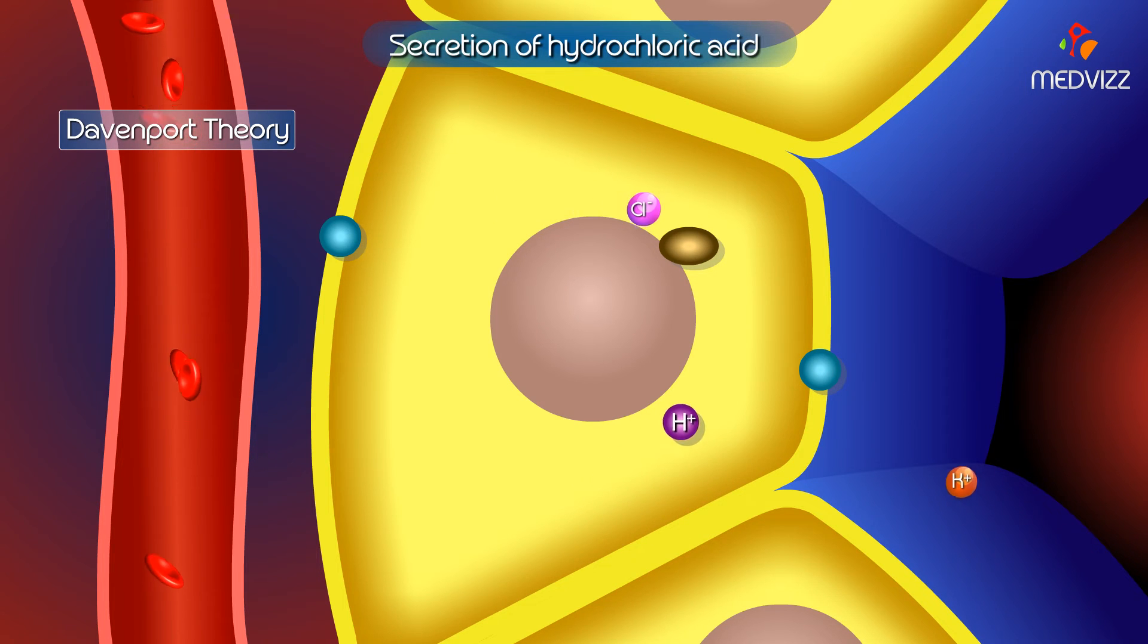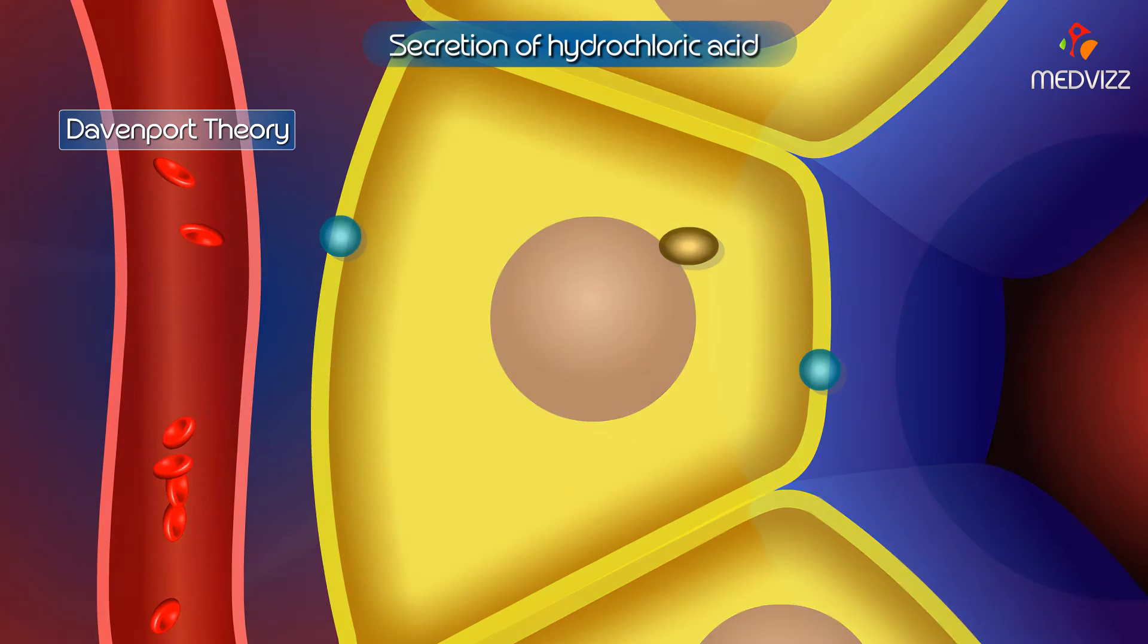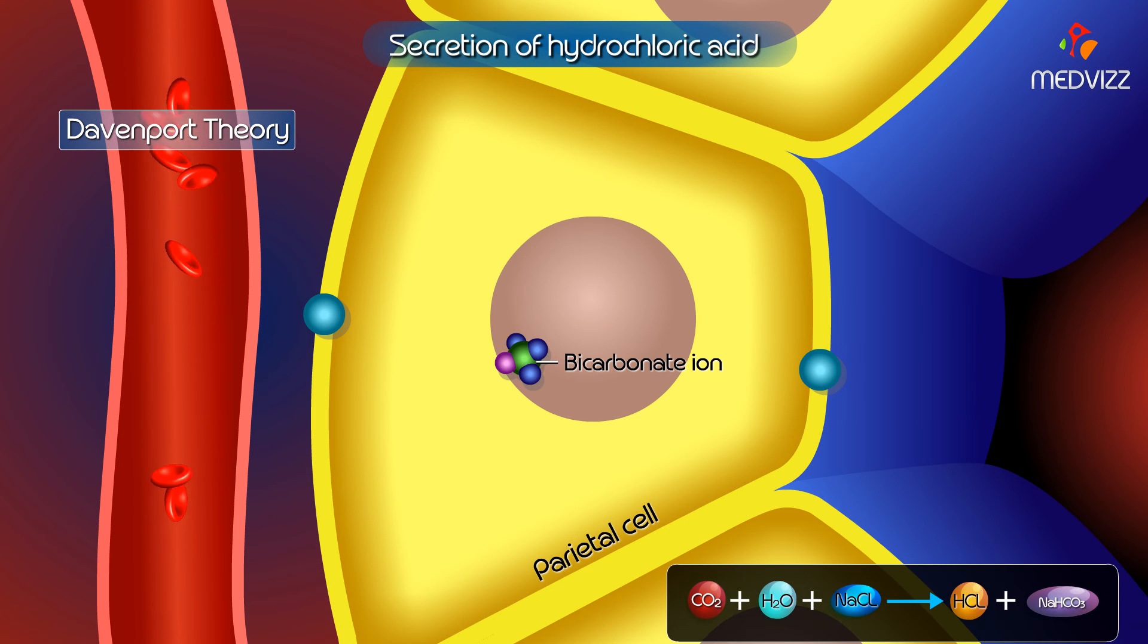The hydrogen ion combines with the chloride ion, which is derived from the sodium chloride in the blood, to form hydrochloric acid. To make up for the loss of chloride ion,